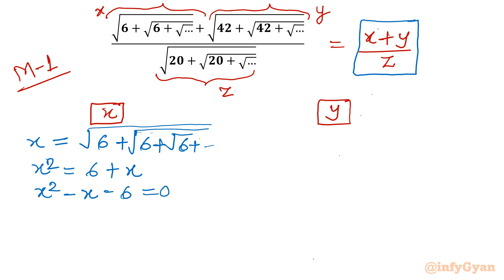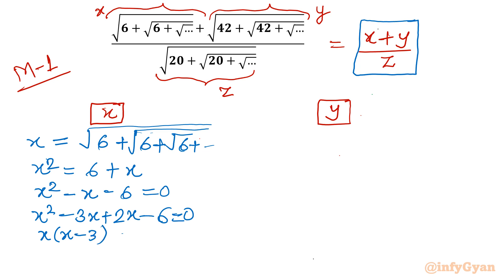Now I will use factorization. The factorization of 6 is 3 times 2, so I can split the middle term as minus 3x plus 2x. Their sum is minus x and their product gives minus 6x squared, which is correct. So the equation becomes x squared minus 3x plus 2x minus 6 equals 0. Taking x common from the first two terms gives x minus 3, and taking 2 common from the last two terms also gives x minus 3.